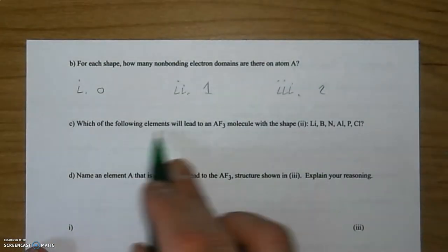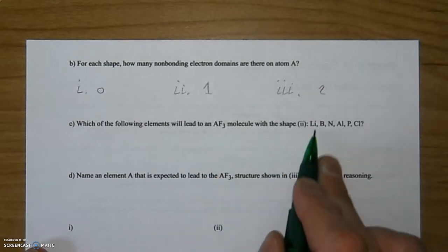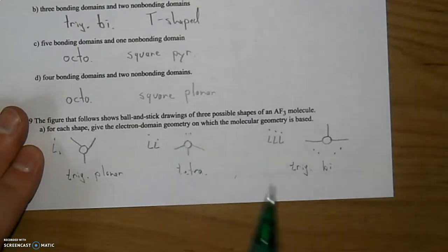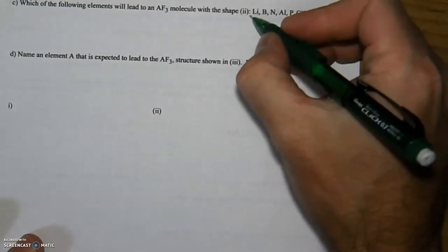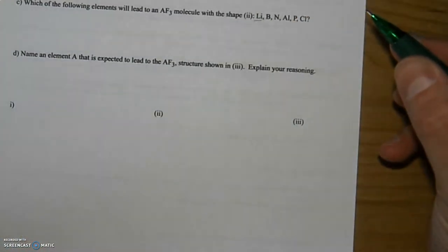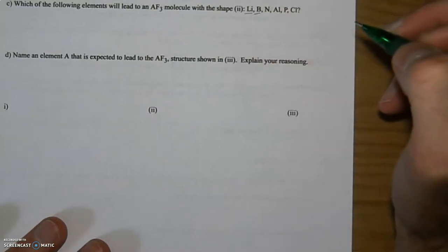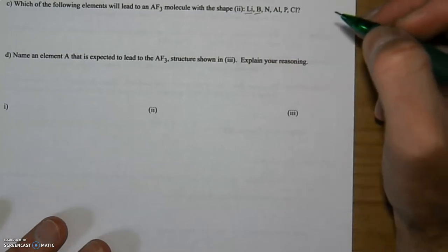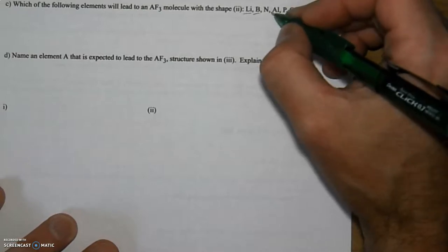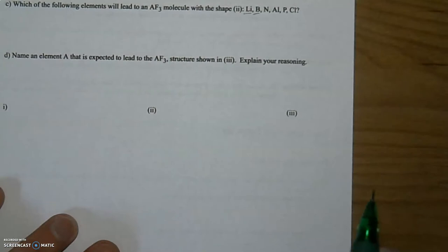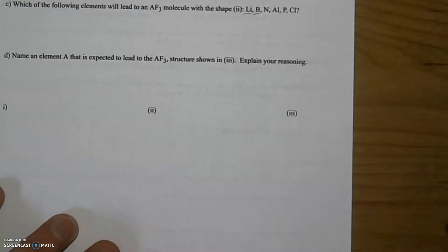Which of the following elements will lead to an AF3 molecule with the shape of number two? So something that's going to give us one lone pair of electrons hanging out there. Looking at this one here, lithium is not really going to work, it's going to be something ionic, so that's probably not going to be our best choice. Boron is hanging out there with five electrons and that one typically isn't going to give us that shape as well. Nitrogen, that's interesting. So when nitrogen is going to combine with three other parts, how many valence electrons does it have?